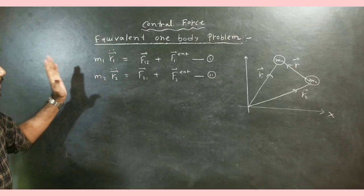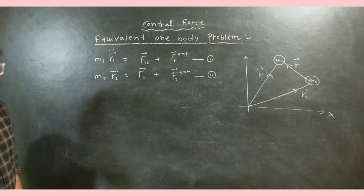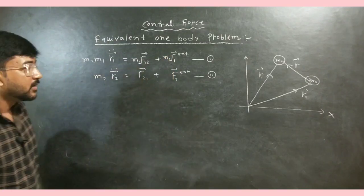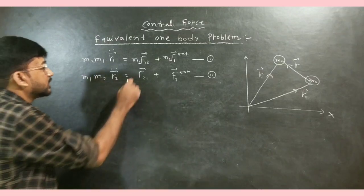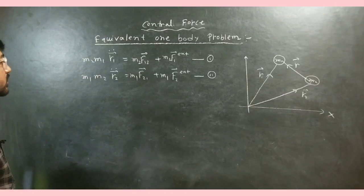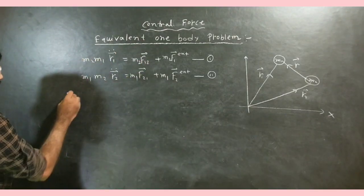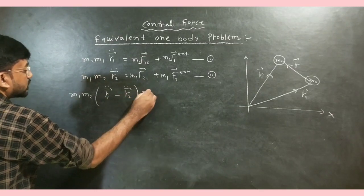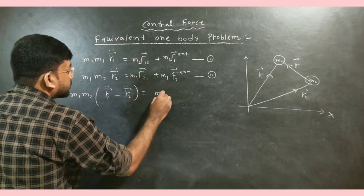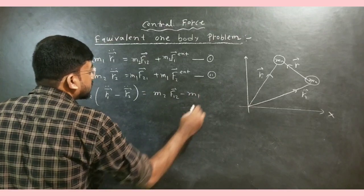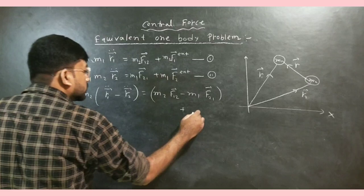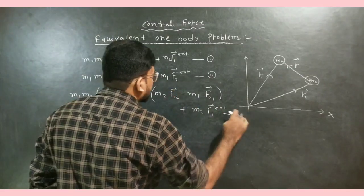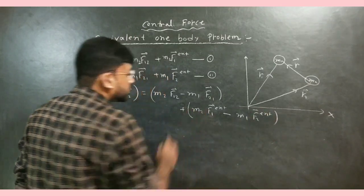Let me modify these equations. Multiply equation 1 by M2 and equation 2 by M1. Multiplying equation 1 by M2 gives M2M1 R1-double-dot equals M2 F12 plus M2 F1-external. Multiplying equation 2 by M1 gives M1M2 R2-double-dot equals M1 F21 plus M1 F2-external. Subtracting, we get M1M2 into (R1-double-dot minus R2-double-dot) equals M2 F12 minus M1 F21 plus M2 F1-external minus M1 F2-external.